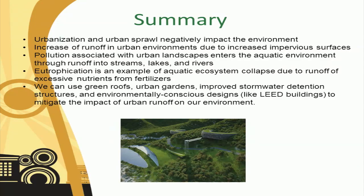To summarize, urbanization and urban sprawl negatively impact the environment in a number of different ways. Because of the large percentage of impervious surface cover in urban environments, rainwater runoff volumes of streams tend to increase and may lead to dramatic consequences like flooding. Pollution associated with urban landscapes enters the aquatic environment through runoff into streams, lakes, and rivers. Eutrophication is an example of aquatic ecosystem collapse due to runoff of excessive nutrients from fertilizers for our grounds and gardens. We can use green roofs, urban gardens, improved stormwater detention structures, and environmentally conscious designs like LEED buildings to mitigate the impact of urban runoff on our environments.